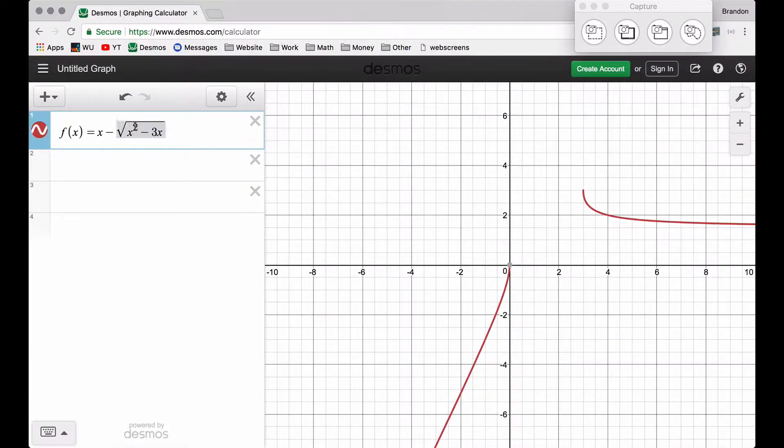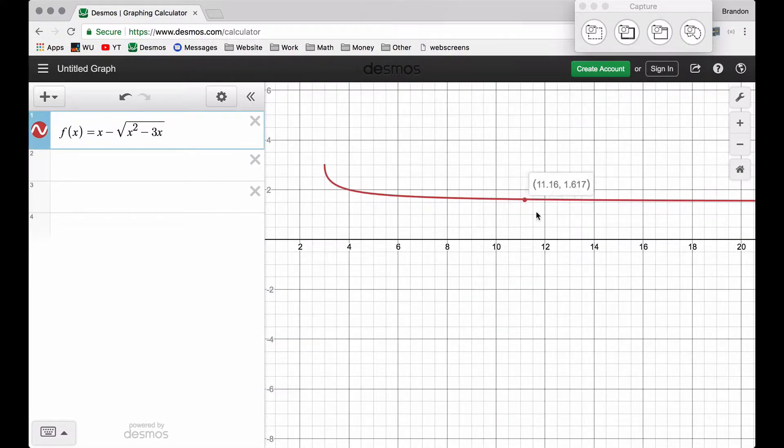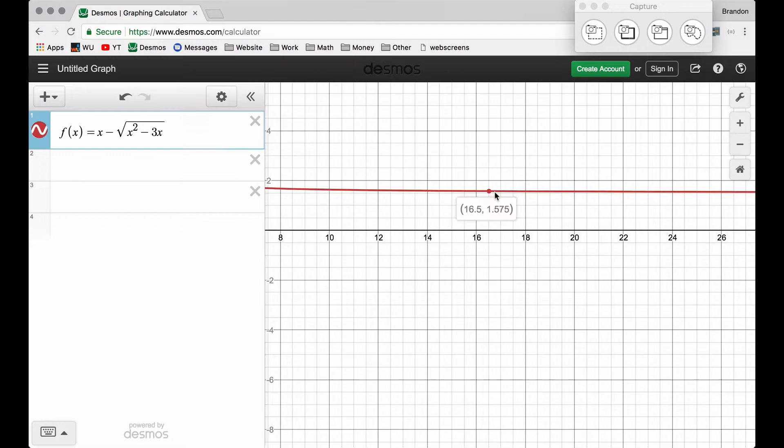If we look over in Desmos, we have f(x) equals that same function, and as x gets big, it does appear that this function is approaching some specific y value. It's our goal to figure out what that y value is. As x gets really big, what y value are we getting close to?